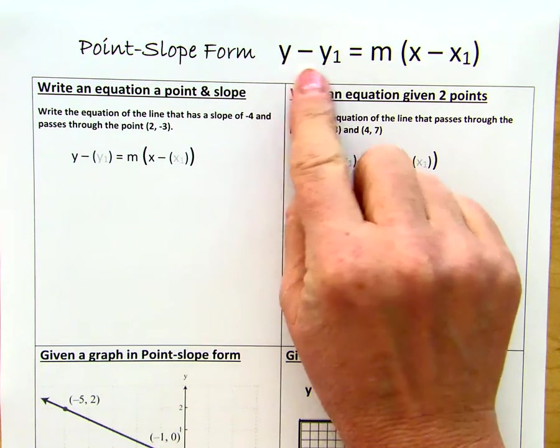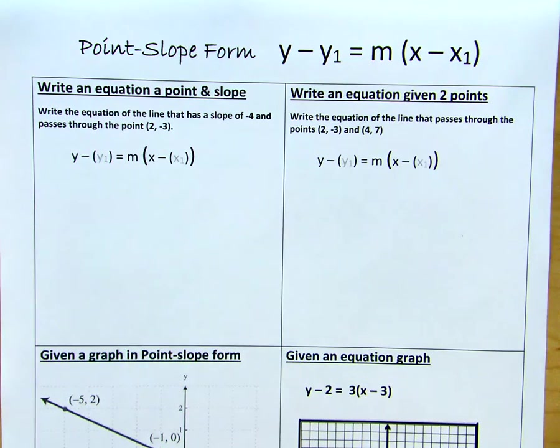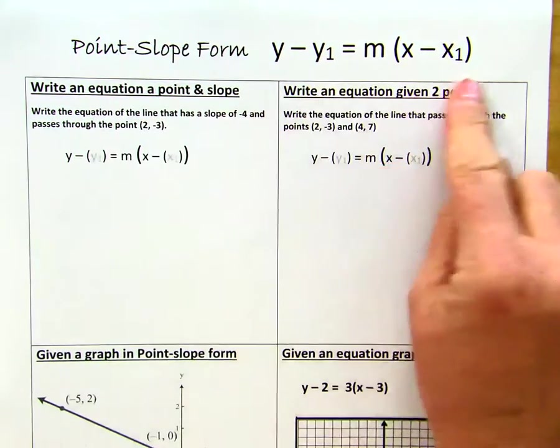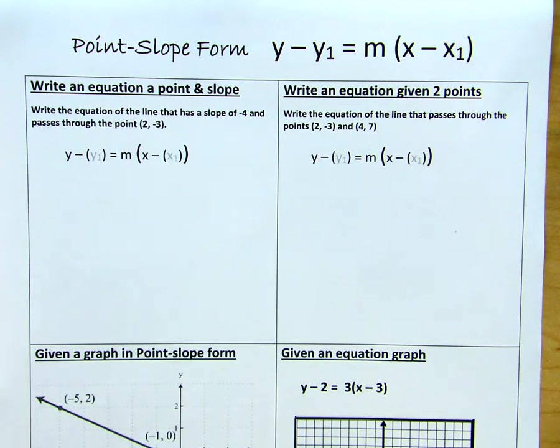Here we have y minus y sub 1 equals m times the quantity x minus x sub 1. And we are going to leave our equations in this form. We will simplify a little bit, but basically this is it. y sub 1, m, and x sub 1 are the values that we will need to substitute in.